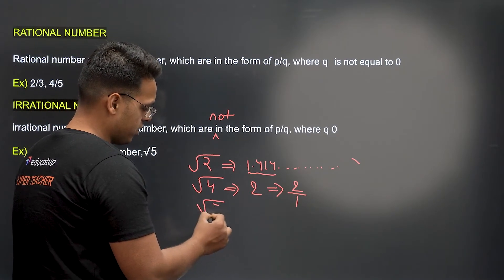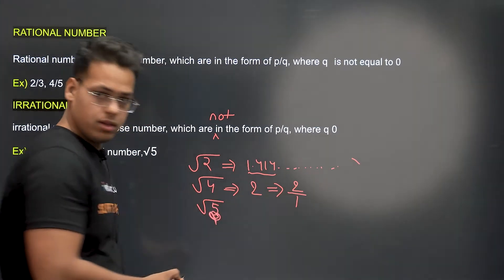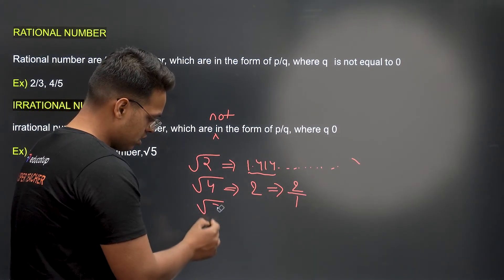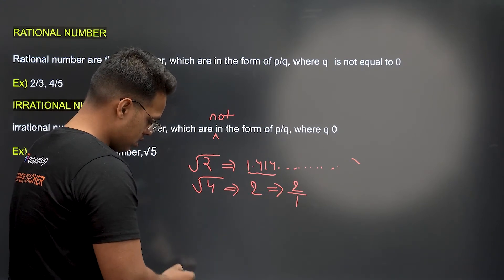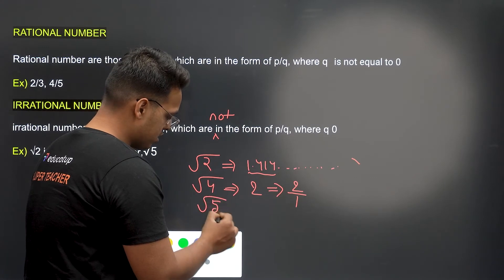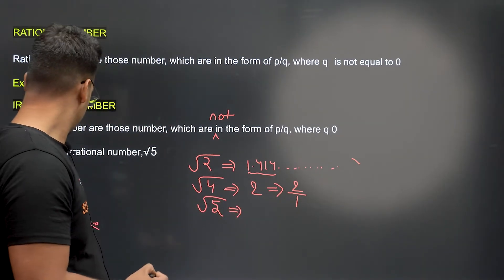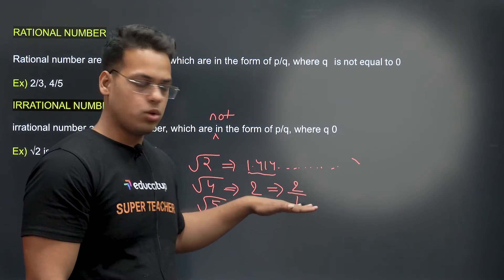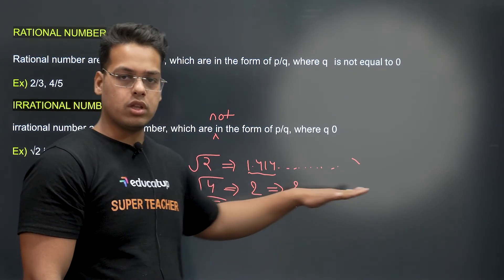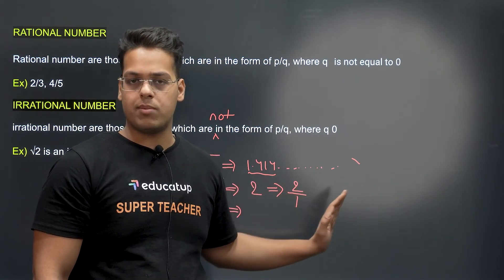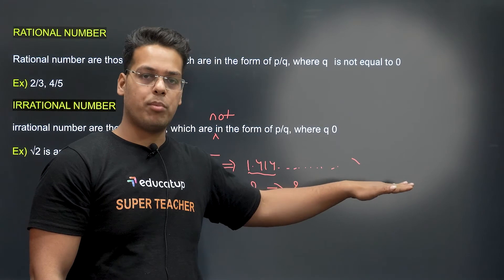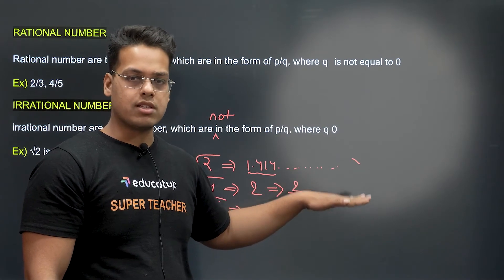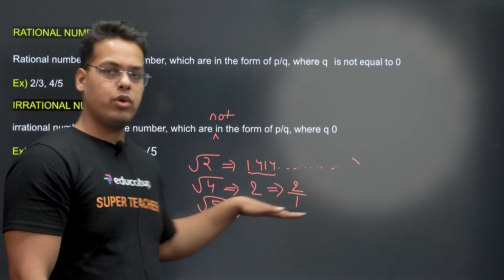Root 5 is an irrational number. The value of root 5 is irrational because we don't know its exact value — it could be 2-point-something. We don't know where it stops. Until we find an end point, we cannot convert it into P upon Q form, so root 5 is an irrational number.